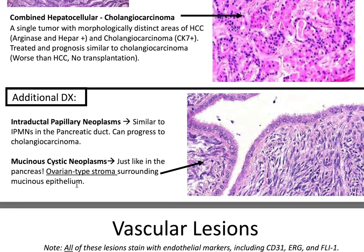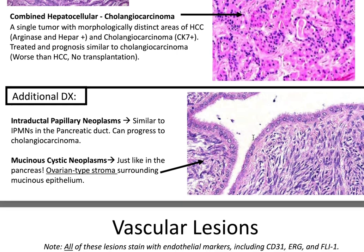Additional diagnoses include intraductal papillary neoplasm, similar to intraductal papillary mucinous neoplasms (IPMNs) in the pancreatic duct, and it can progress to cholangiocarcinoma. Then mucinous cystic neoplasms, just like in the pancreas — you can have them in the liver as well, and cytologically you'll see ovarian-type stroma surrounding the mucinous epithelium.